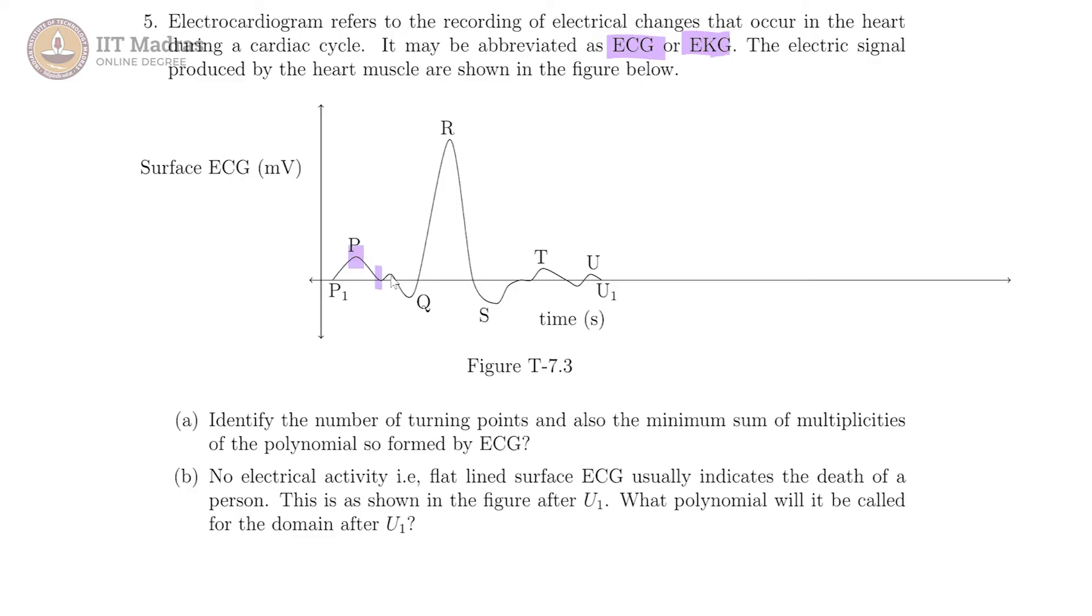So that will be 1, this is 2, this is 3, 4, 5, 6. And here this is not a turning point - it is flattening out like this and rising, therefore it is not a turning point.